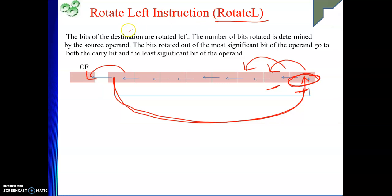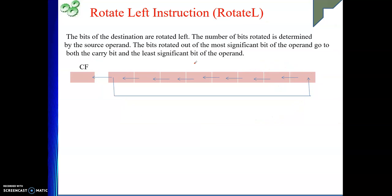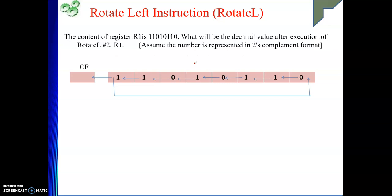The bits of the destination are rotated left. The number of bits rotated is determined by the source operand — you can give it as an immediate operand or as a count in a register. The bits rotated out of the most significant bit go to both the carry flag and the least significant bit. The 8085 processor uses this instruction.